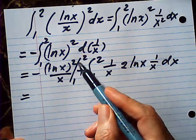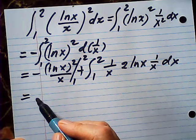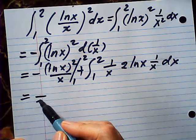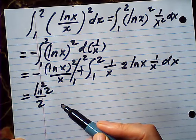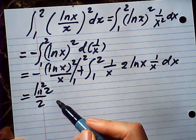So, when you put a 2 here, this will be half log 2 squared, isn't it? When you put a 1 here, it's 0. So,